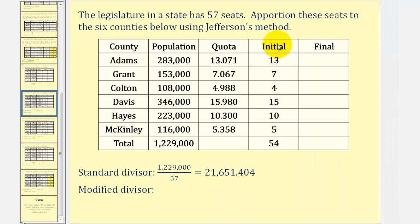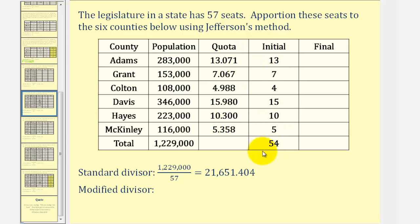For the initial apportionment, we ignore the decimal part of each quota, giving us 13, 7, 4, 15, 10, and 5. Notice the total is 54, but we have 57 seats to apportion. So for the next step, we reduce the standard divisor, recalculate the quotas, and repeat the process until the allocation sums to 57.